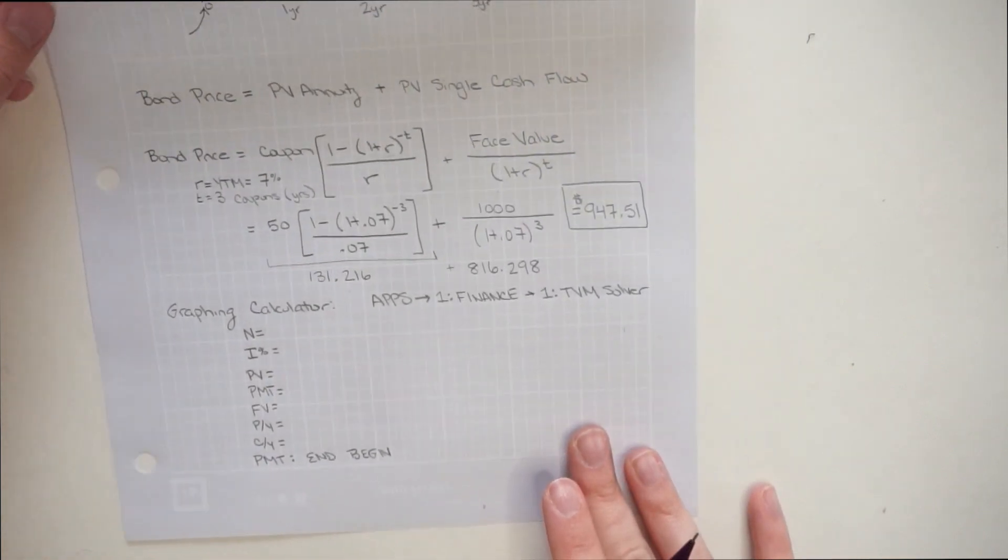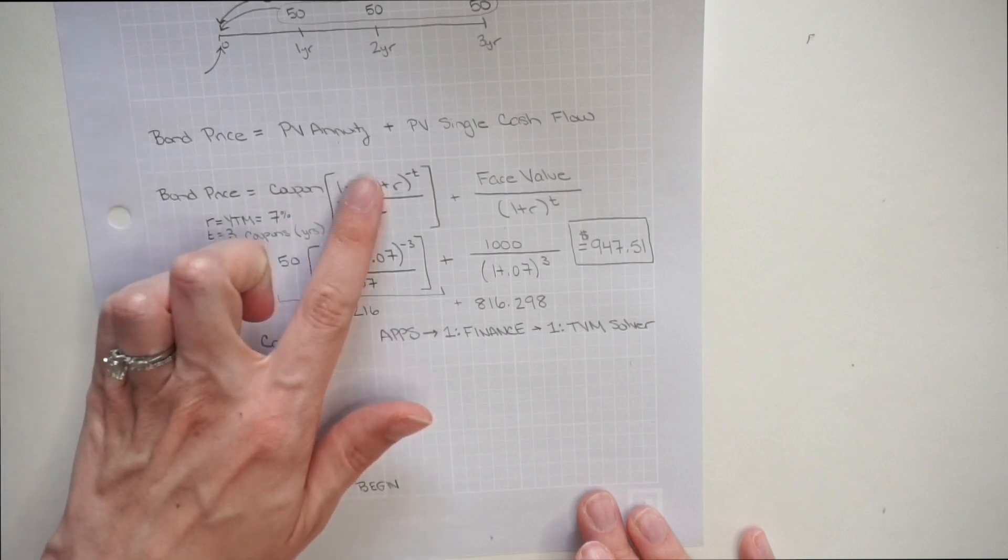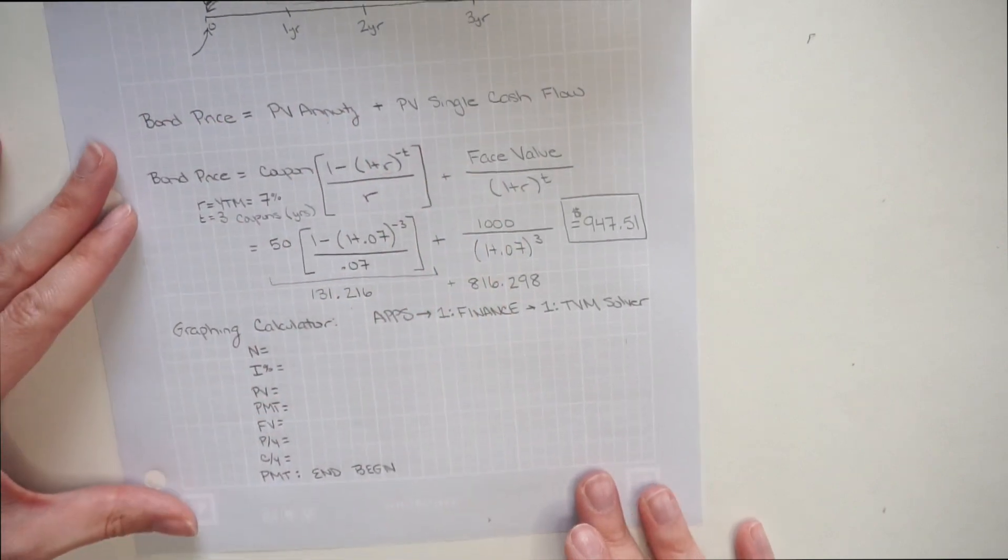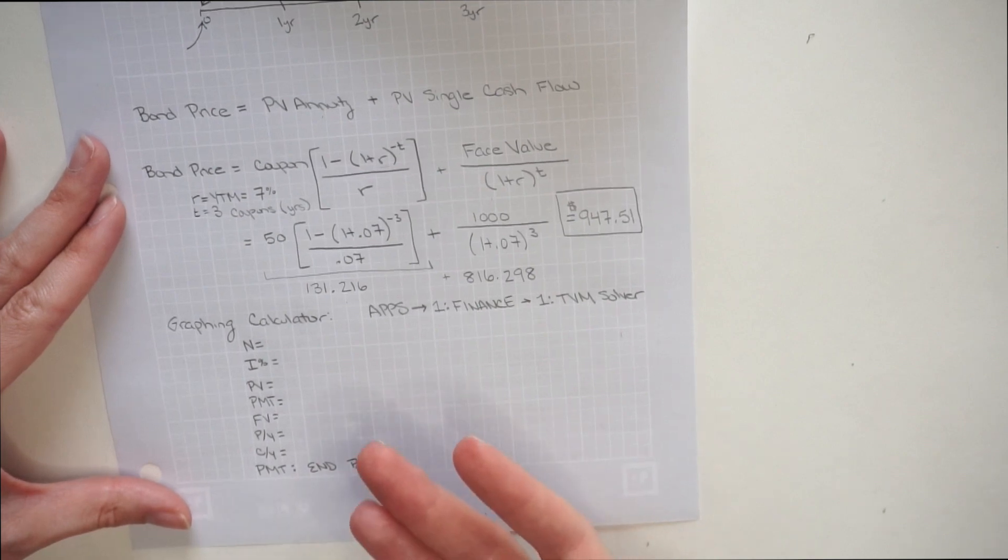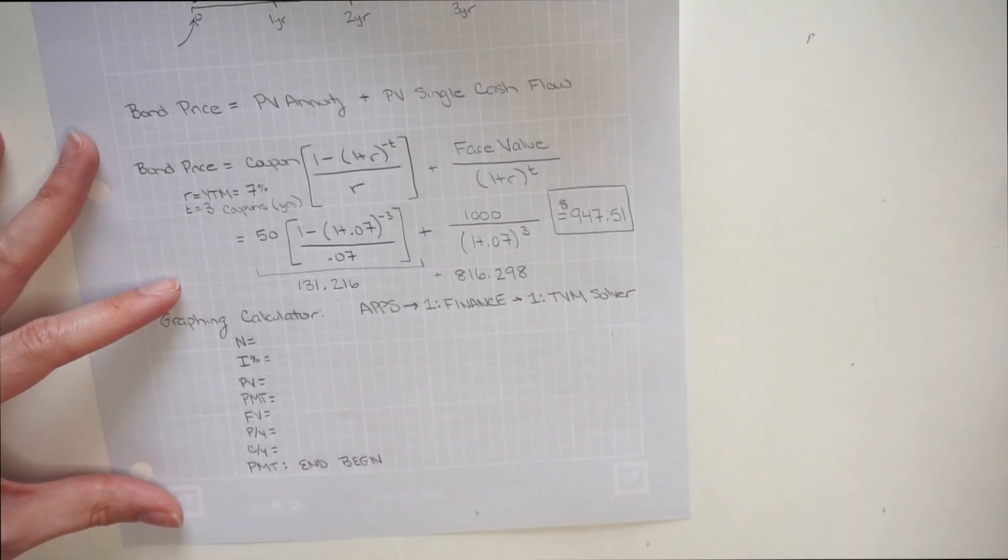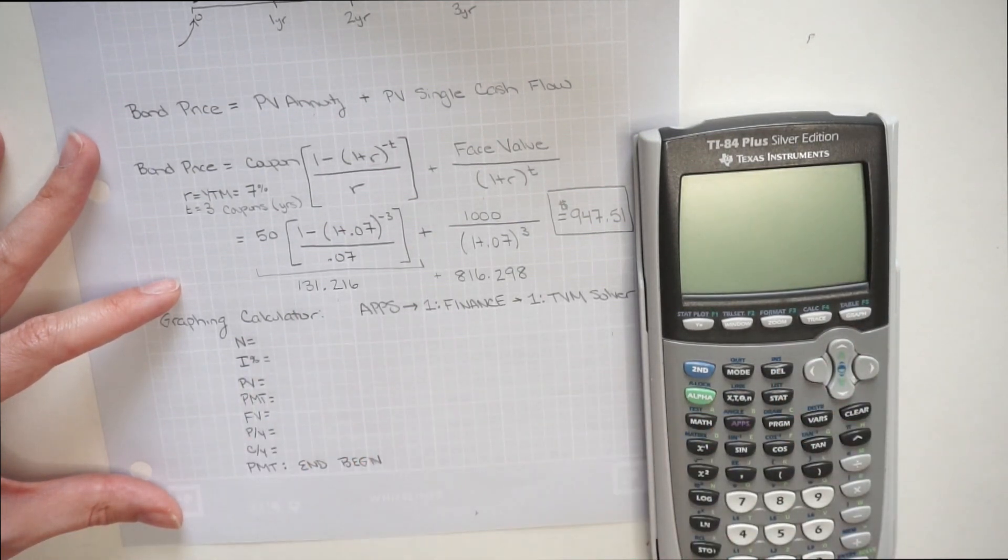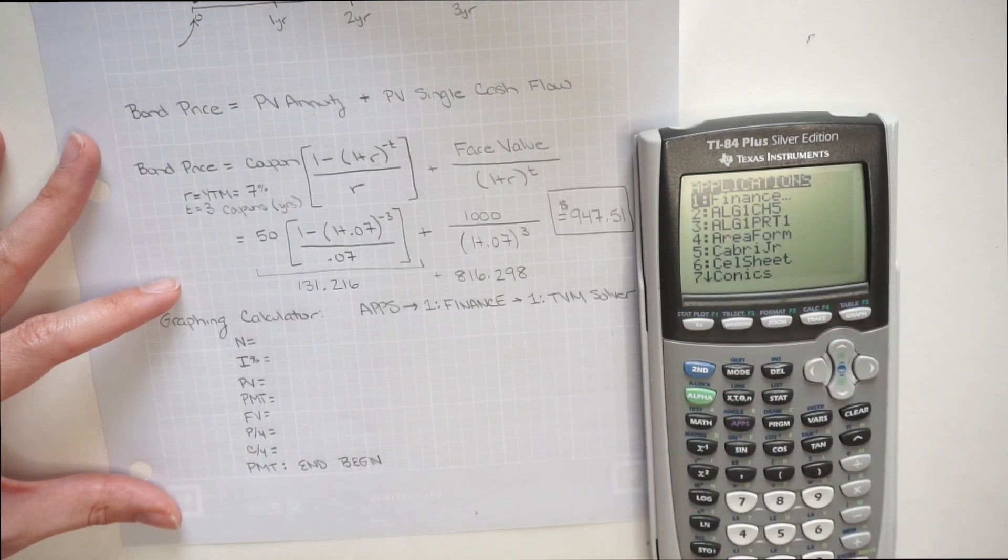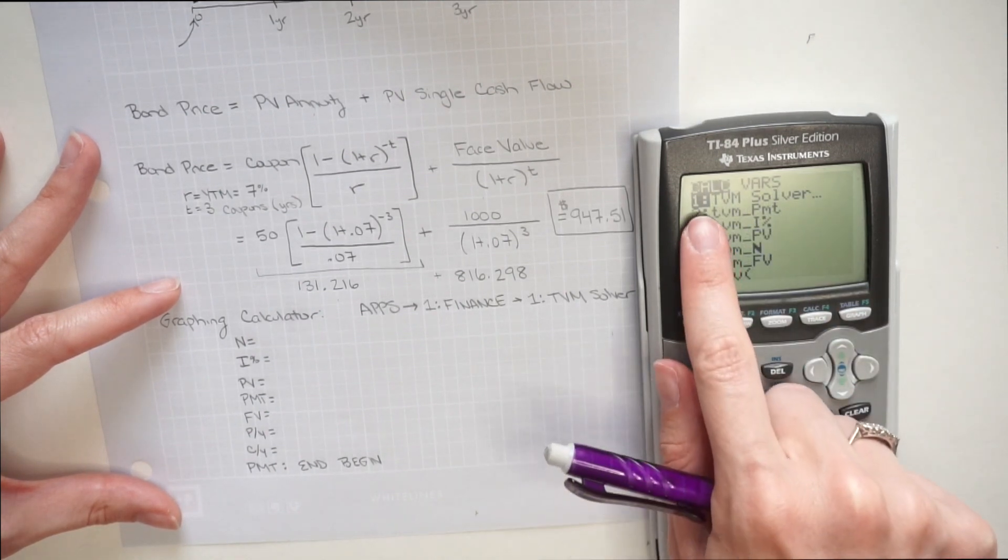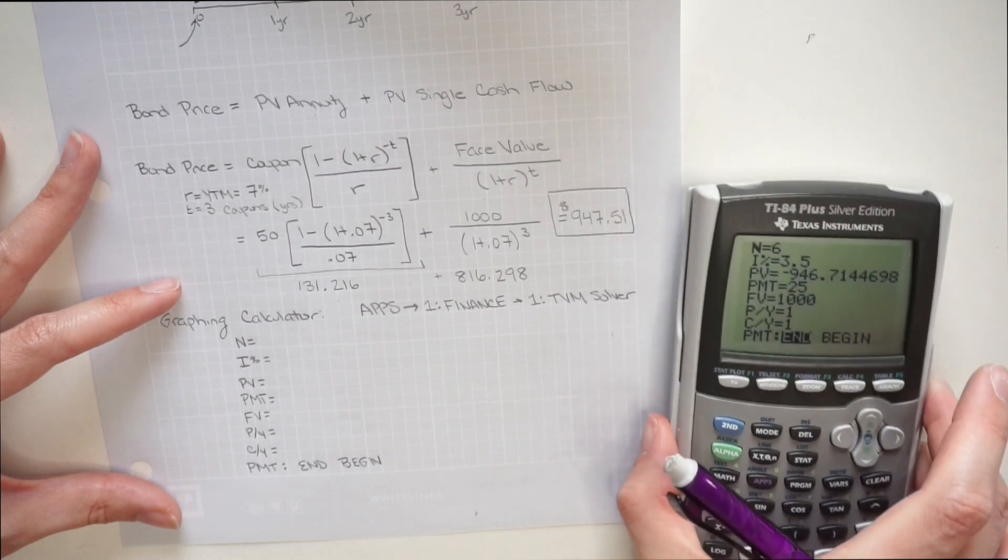Now, another alternative that people like to use is the graphing calculator functions, because these are really nice built-in functions where you don't have to use the full equations. So let's look at our inputs here on the graphing calculator and figure out what each one of these are going to be. Where you find the time value of money solver on the calculator is you turn it on, then you go to apps, it's going to be the first option there, finance. Then again, the first option there, so you press enter again. And now we have a time value of money solver.